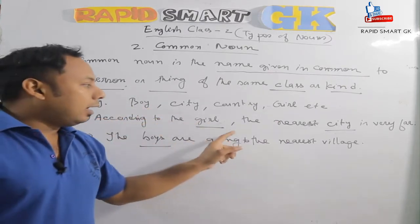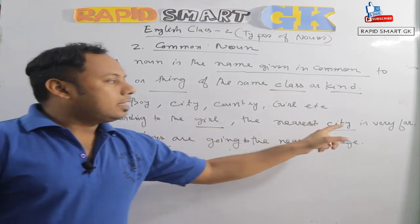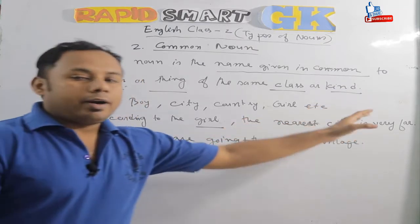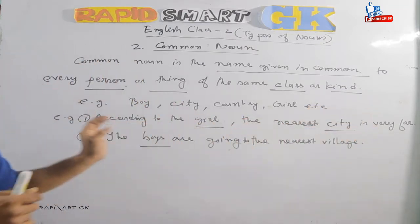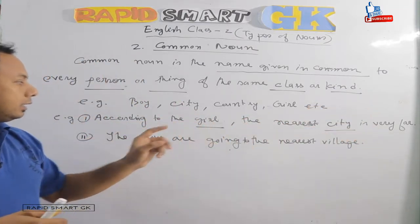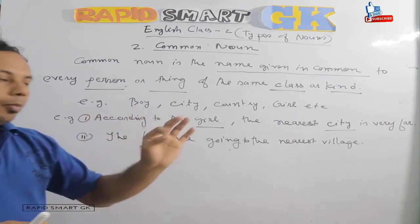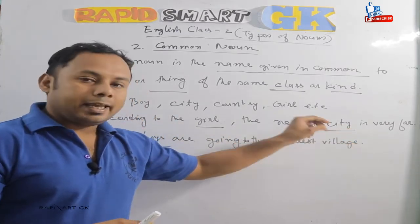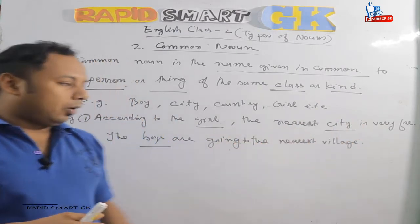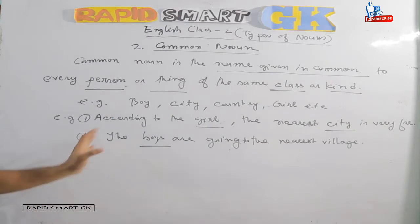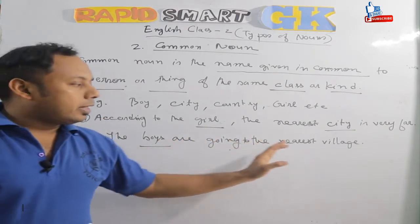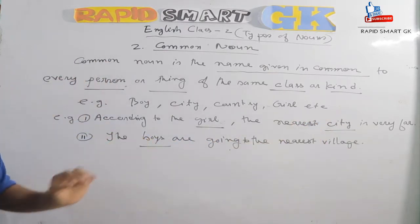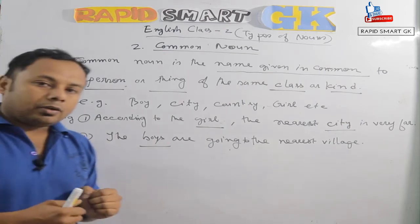According to the example, 'girl' is a common noun. For example, the nearest city is far — 'city' is a common noun. Next, the boys are going to the nearest village — 'boys' and 'village' are common nouns.